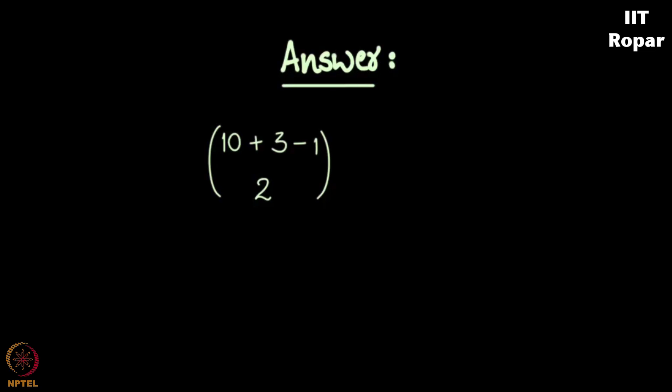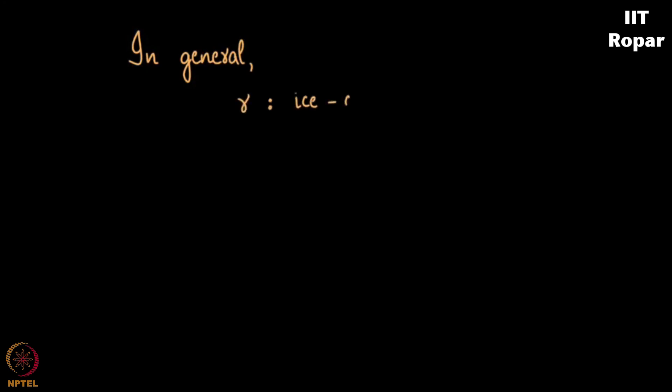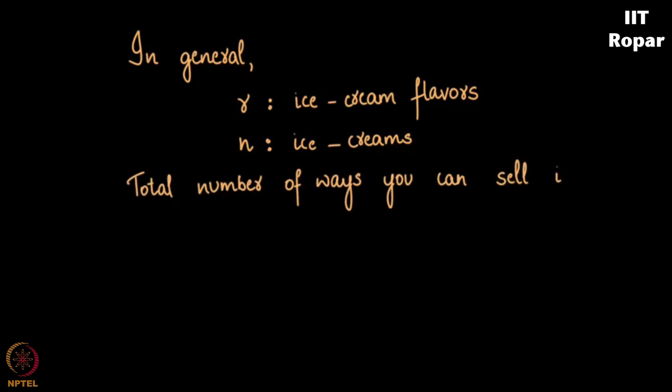r ice cream flavors, okay, and then if you need to sell it to n kids, namely n ice creams, and the number of flavors is r, the total number of ways in which you can sell this happens to be n plus r minus one, choose r minus one.